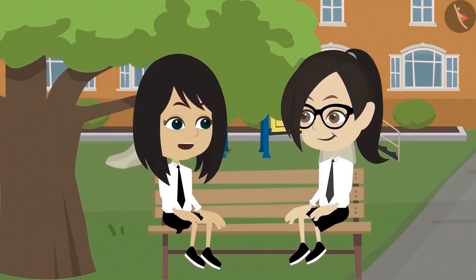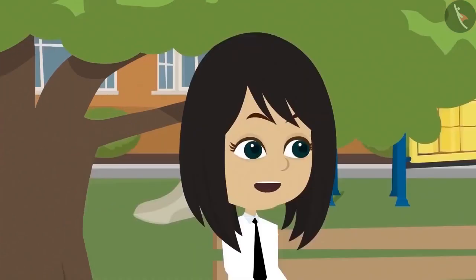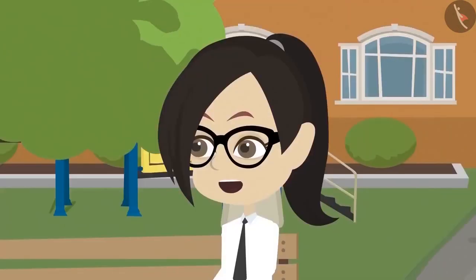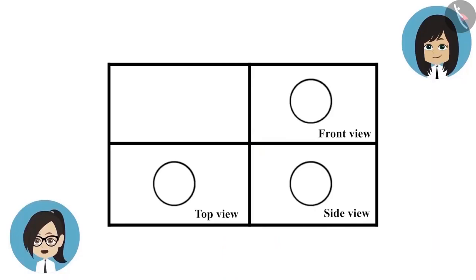Vandana, yesterday I was drawing the top view, side view and the front view of different objects. I found some objects whose shape you will not be able to guess easily. Well, this will be a lot of fun. Show! See this. Hey, these are all in the shape of a circle. How did this happen? Is this really the drawing of an object? Yes, and it can be easily found.